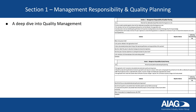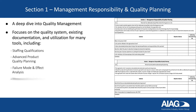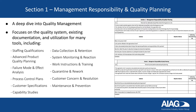Section 1 is a deep dive into the quality management system. It focuses on the quality system, existing documentation, and utilization of many tools, including staffing qualifications, advanced product quality planning, failure mode and effect analysis, process control plans, customer specifications, capability studies, data collection and retention, system monitoring and reaction, work instructions and training, quarantine and rework, customer concern and resolution, and maintenance and prevention.